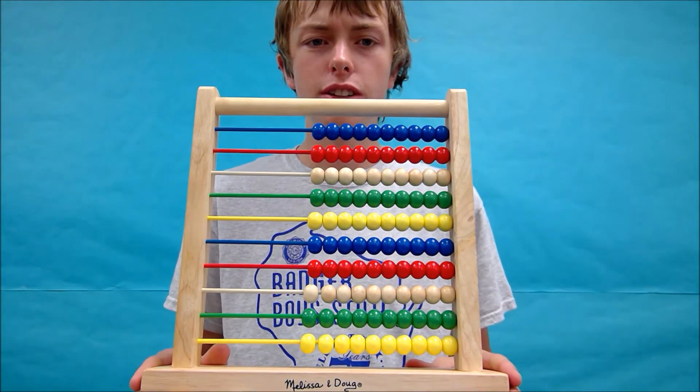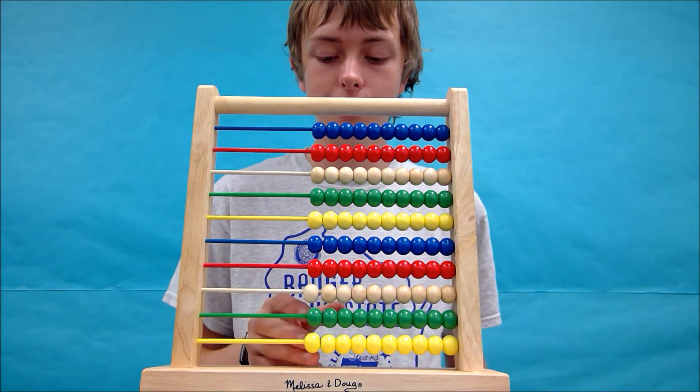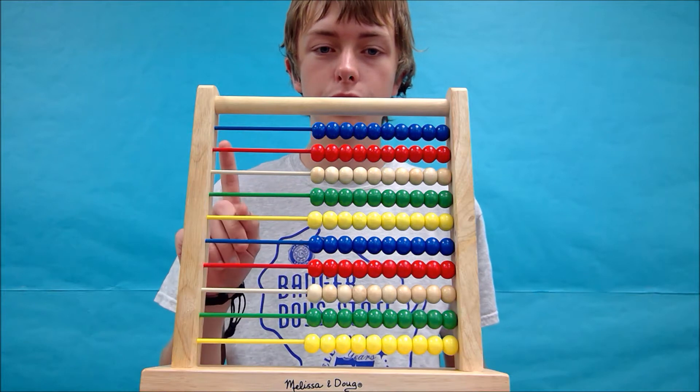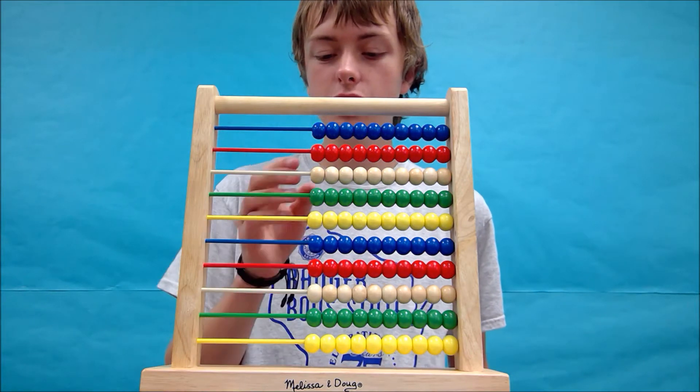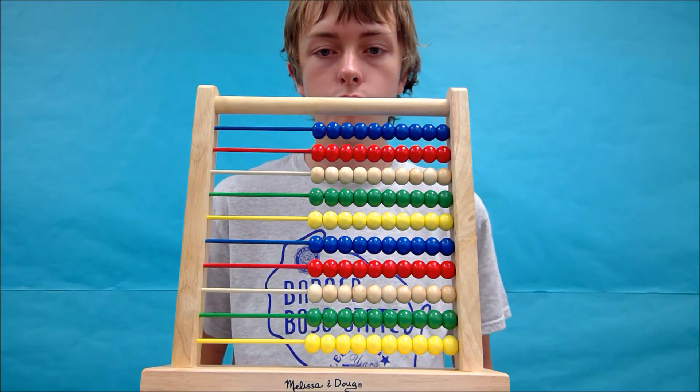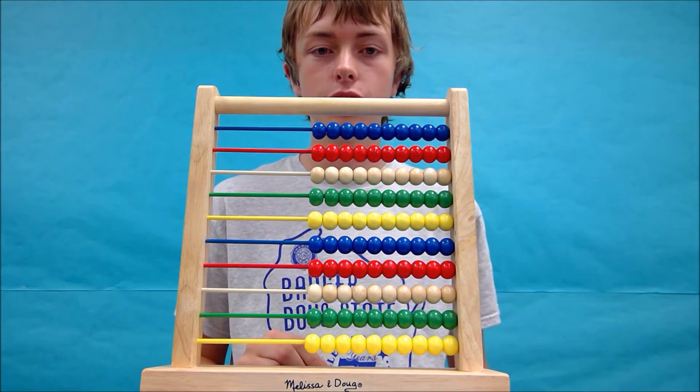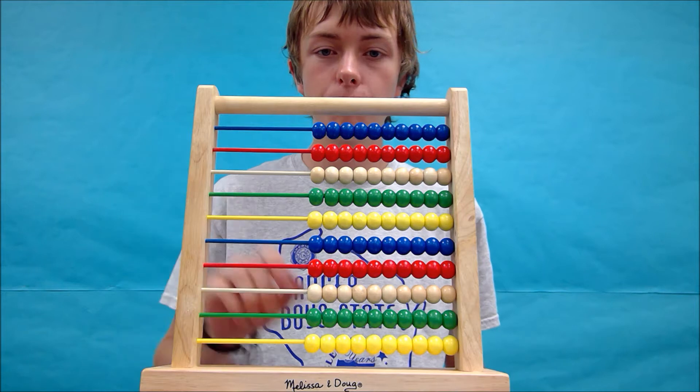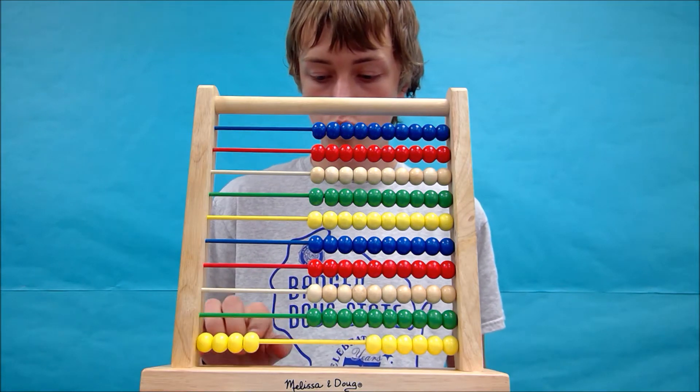Double digit addition is really similar to single digit, but instead of only one place, you have two. So let's get started right away. We're going to try 24 plus 12. Like we did in single digit, we're going to form the first number first, so let's go 24.